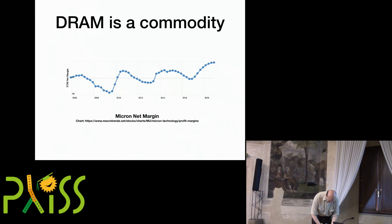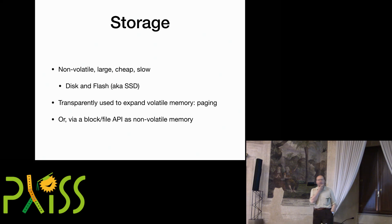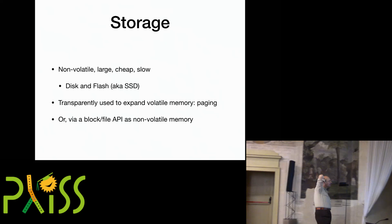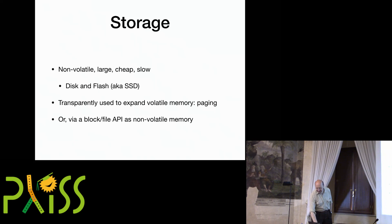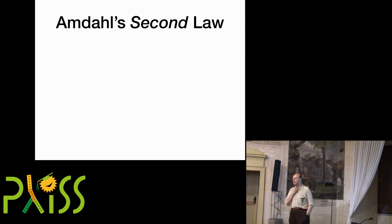In contrast, we have storage — the generic term for the existing non-volatile storage media — which is non-volatile, large, cheap, and above all, slow. It's transparently used as volatile storage to expand memory space, but also as file storage. Who knows Amdahl's second law? The first law is the one about parallelism. Amdahl's second law says that to build a balanced system, for each instruction per second that you can execute on your processor, you should have one byte of memory and one bit per second of I/O.